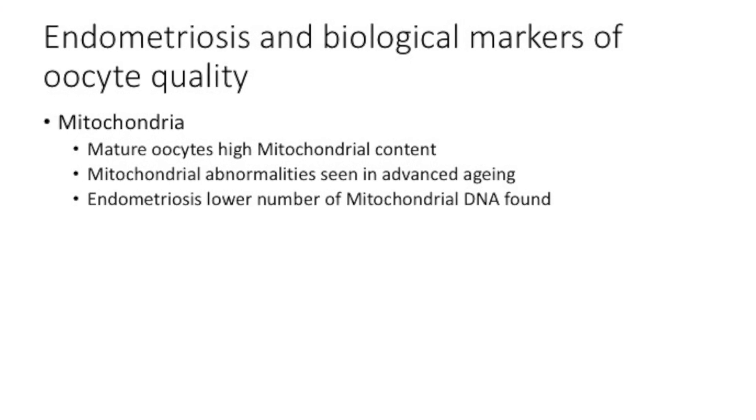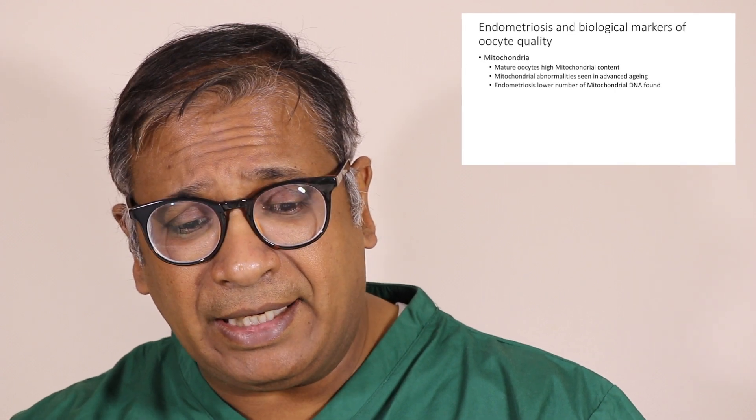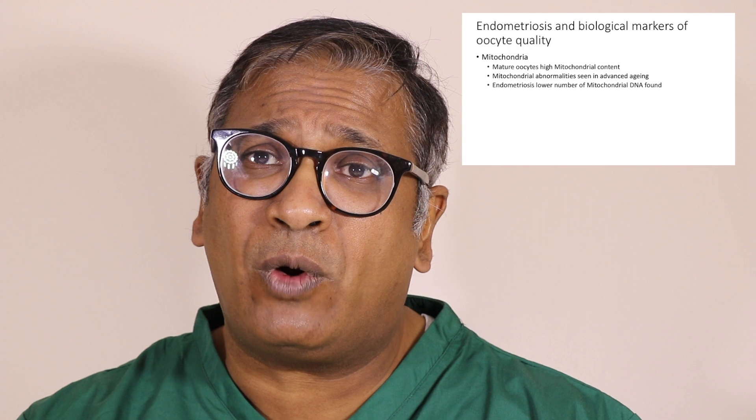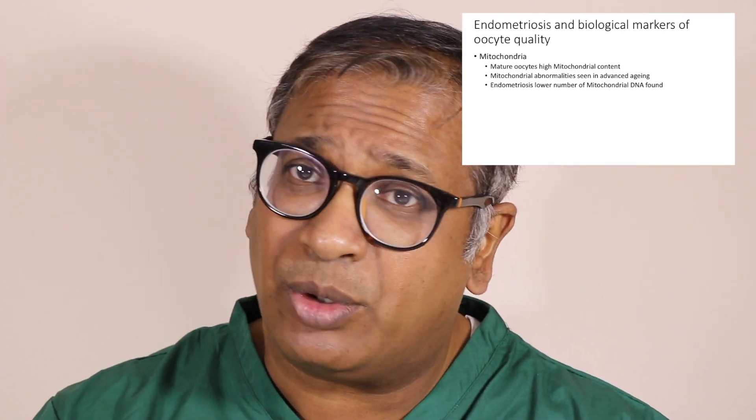What happens with mitochondria? At present we do have technology that looks at mitochondrial DNA. Simply put — mitochondria are the engines, the batteries of the cell, and if your mitochondrial DNA starts going down, the energy in the cell is likely to go down. The next two to three years will probably focus on quantifying mitochondrial DNA. We know that mature oocytes have a high mitochondrial content, and that mitochondrial abnormalities are seen with age — as age advances, mitochondrial quality decreases. But we have also seen that in endometriosis, a lower amount of mitochondrial DNA is present.